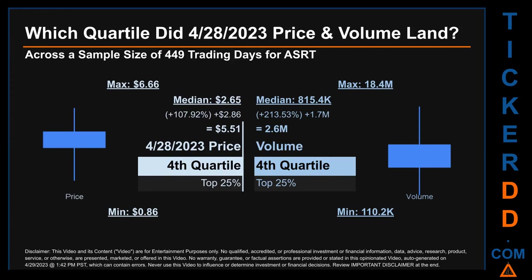Hello, my name is Maria. Which quartile did April 28, 2023 price and volume land in, across a sample size of 449 trading days? The maximum end-of-day price for ASRT was $6.66 while the minimum was 86 cents. Within that price range, April 28, 2023's price of $5.51 landed within the fourth quartile, meaning it was within the top 25% of all sampled end-of-day prices. The day's volume also landed within the fourth quartile, marking it within the top 25% of all sampled daily volume, which saw a max of 18.4 million and a minimum of 110,200.